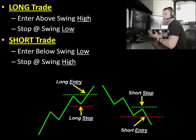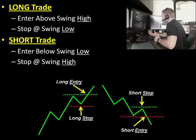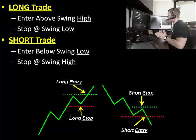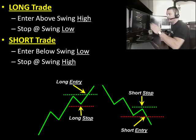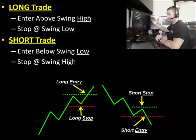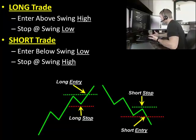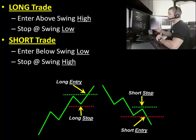Now, how do we use these? For a long trade — you'll see the long example in the lower left-hand corner here — I'm going to enter the market above the swing high, and I'll place my protective stop a tick or two below the swing low. Mark up your swing high: your long entry is above the swing high, and the long stop will be below that swing low. To the short side, we'll enter below a swing low and place our stop just above a swing high.